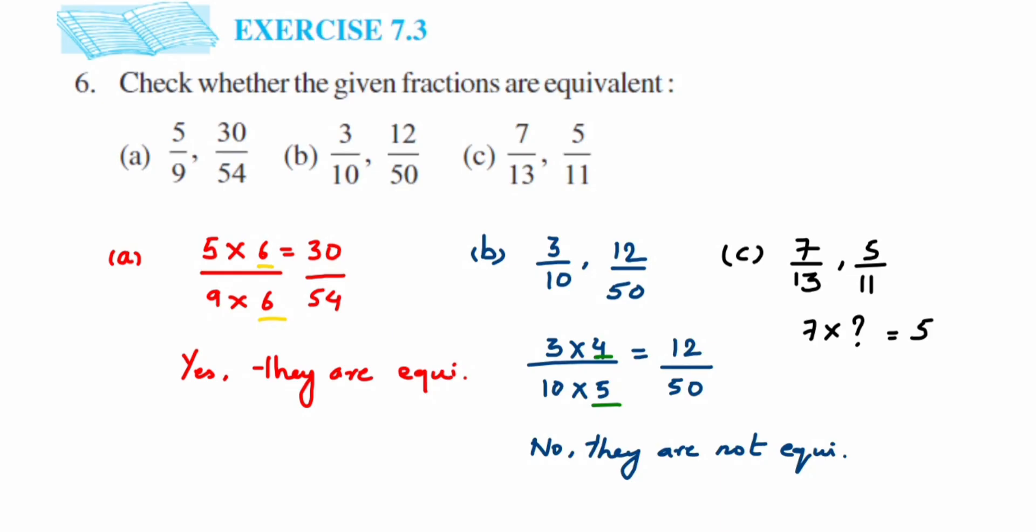Similarly in the case of 13, from 13 we will not get 11. With 13 table, if you multiply 13 into something, it doesn't give 11. Or if you divide, you will not get it.